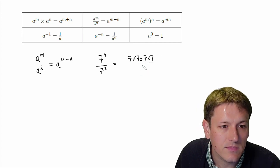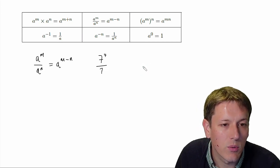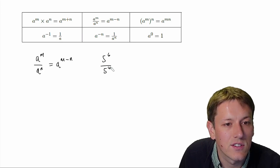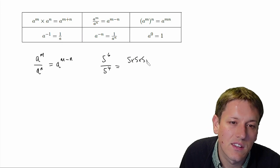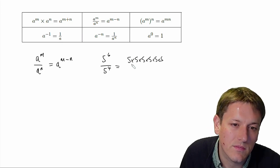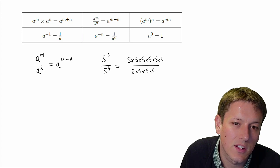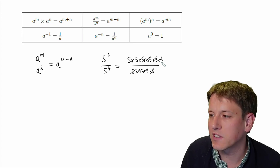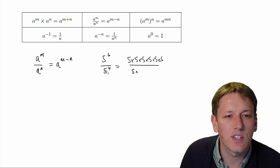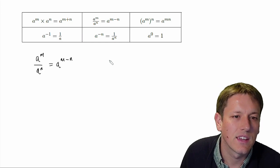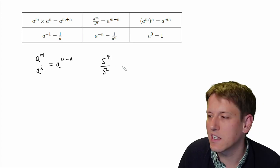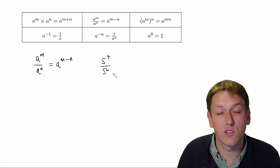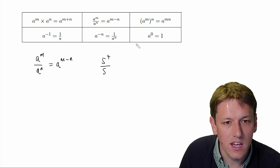So we can see that would work with any combination. If I did 5 to the 6 divided by 5 to the 4, I'd start with six 5s on the top, divide by 5 times 5 times 5 times 5, and cancel 4 of those 5s. Now, you might be asking: what if it's the other way around? How do I justify something like 5 to the 4 divided by 5 to the 6? Something slightly different happens when the number on the bottom is bigger than the one on the top — and we're going to come to those in just a second.